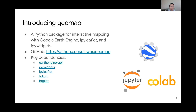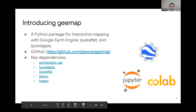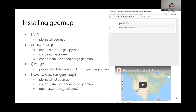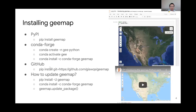GEMap runs on Jupyter Notebook and Google Colab. However, Google Colab right now does not support ipyleaflet yet — it may support it in the future. You can use GEMap on Colab if you're only running computation and don't need to display the map. Otherwise, you need to run it on Jupyter for mapping. You can install using pip, conda, or directly from GitHub.